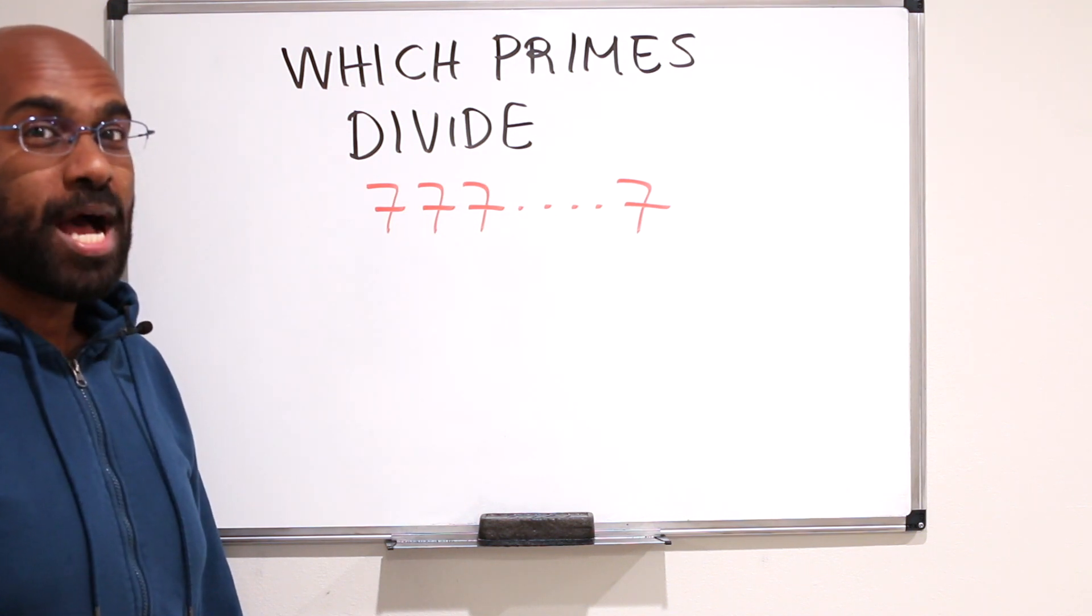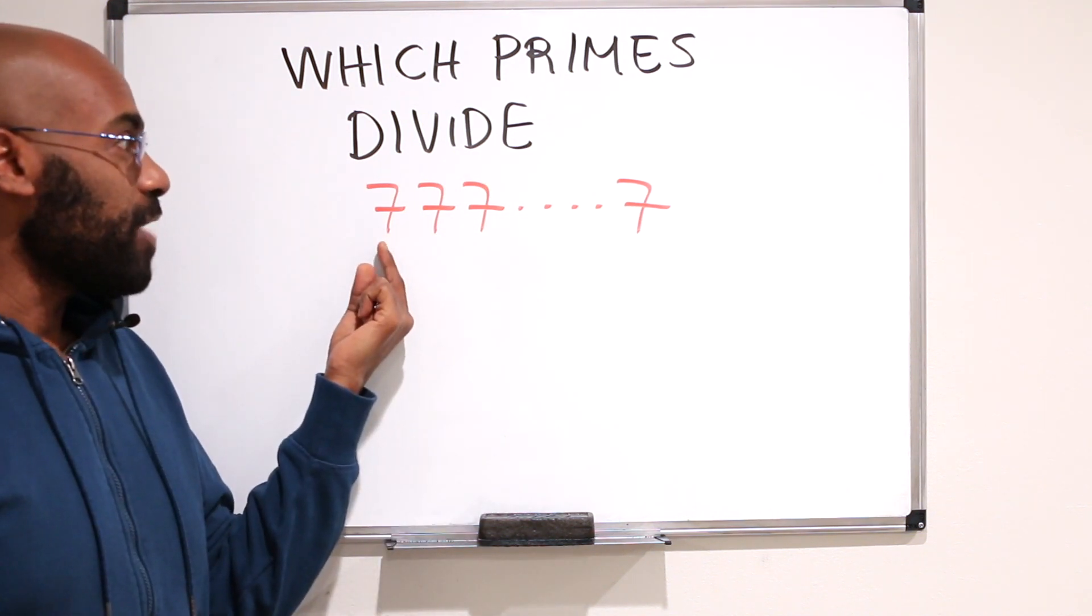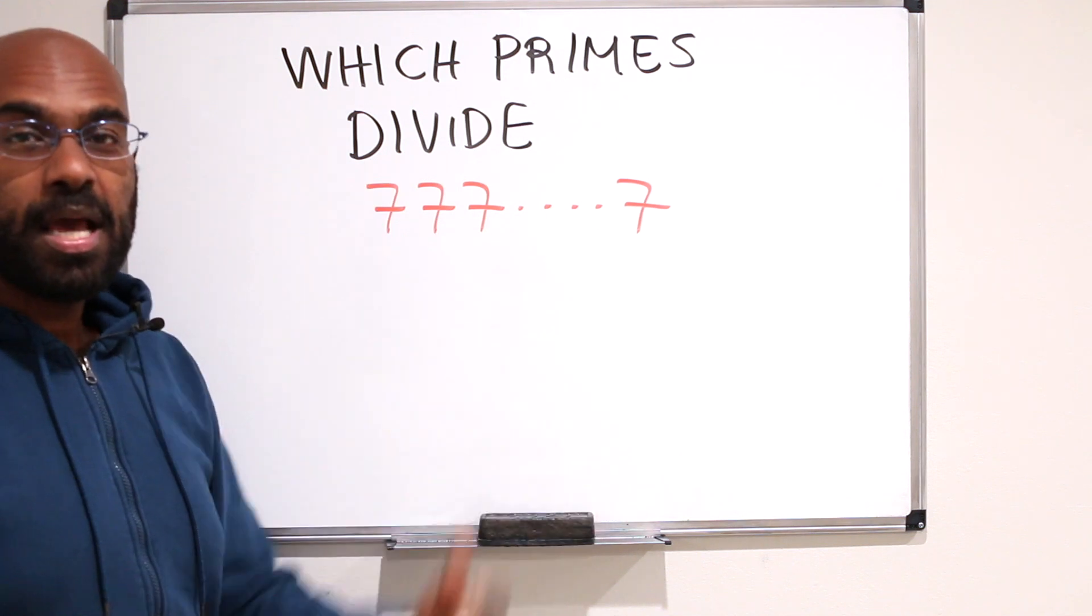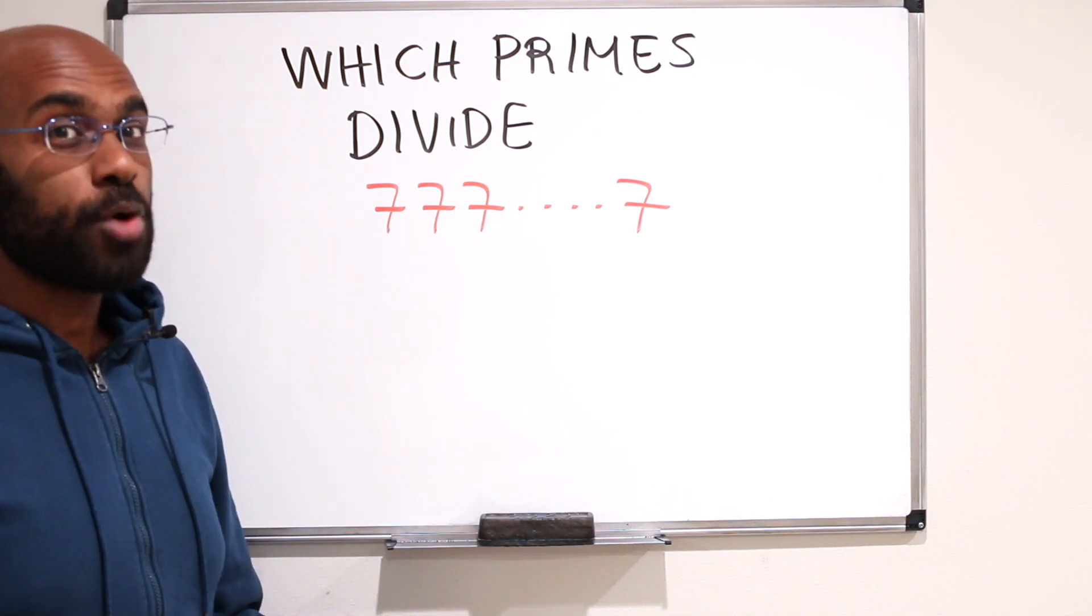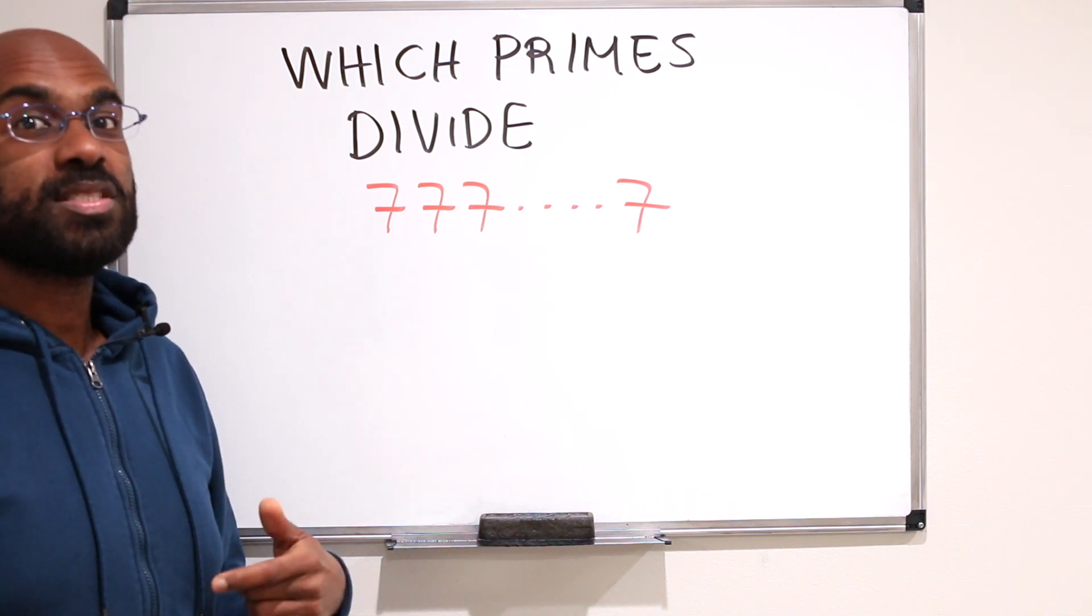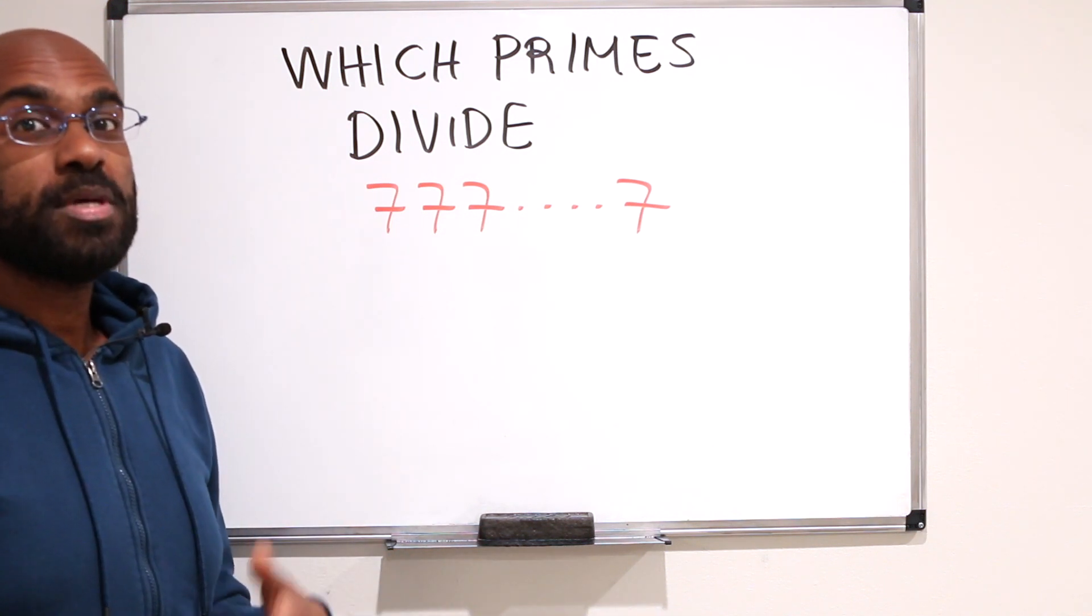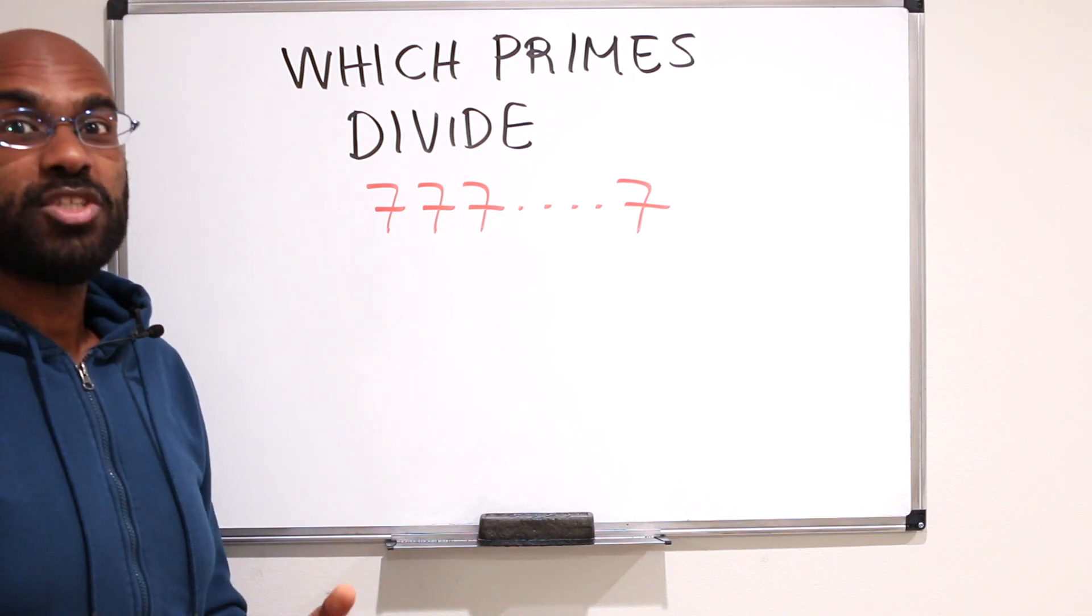In this video, we're going to talk about which primes divide a number that has a bunch of 7s in it. And the answer turns out to be quite surprising, is pretty much almost all primes. So stay tuned for the answer and an interesting discussion afterward about how this plays a role in decimal representations of numbers.